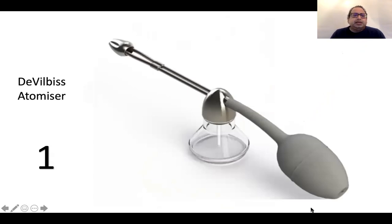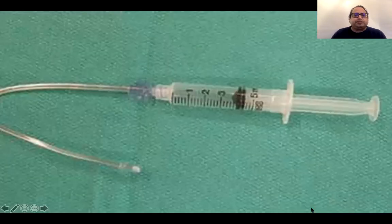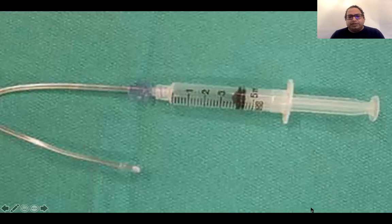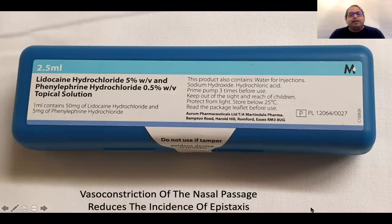You could also use atomizers — DeVilbiss atomizers — and these can be modified: instead of using the manual pump, you could attach oxygen tubing with a hole in it to control atomization. We also have sprays; the one I use is lidocaine with phenylephrine spray. Phenylephrine is a vasoconstrictor, so instead of applying a vasoconstrictor separately, you can use this combination to anaesthetise the nasopharyngeal airway and also cause vasoconstriction, increasing the space for passing the tube.